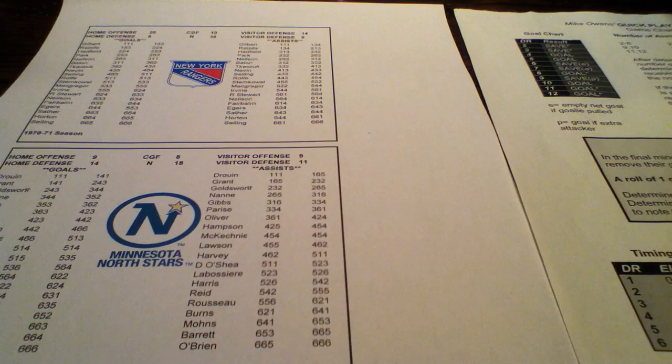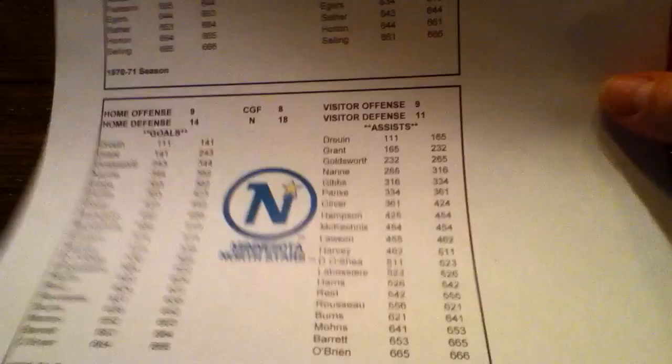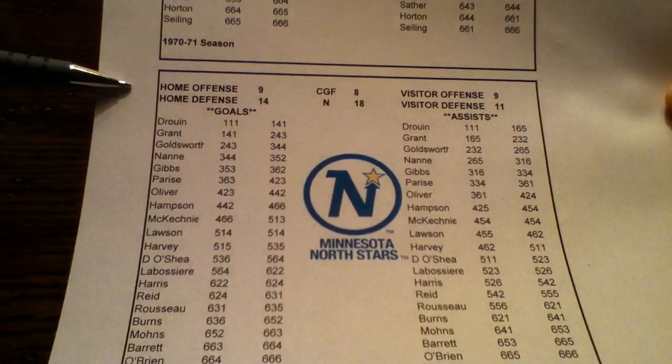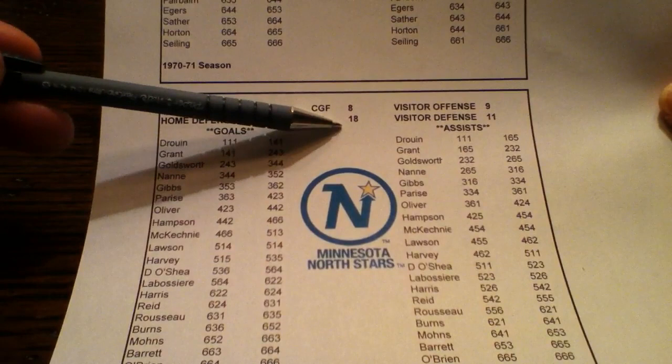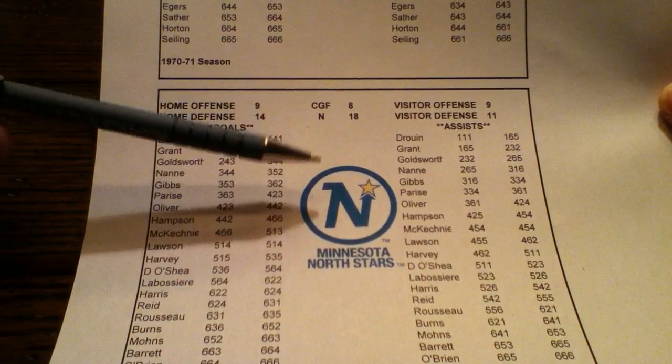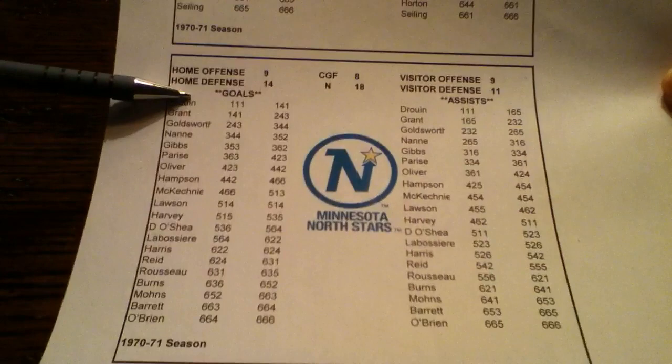Some people have worked on rating teams for seasons beyond that. Basically, each team is rated for offense and defense, home and away. The CGF is called the Close Game Factor, showing how they do in close games. There's also a normalization factor, so if you want to play games with teams from different seasons, that comes into play. The rest is goal ranges, so when a goal is scored you roll 3d6 to figure out who scored.